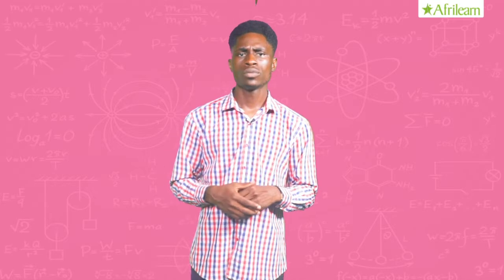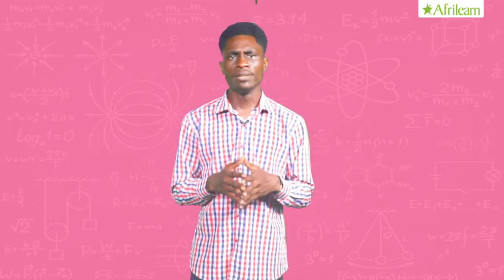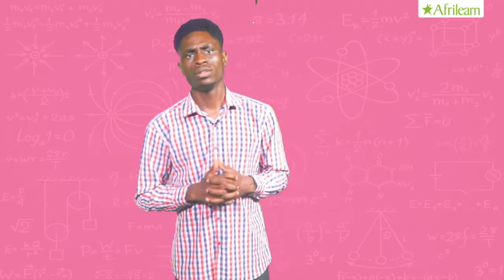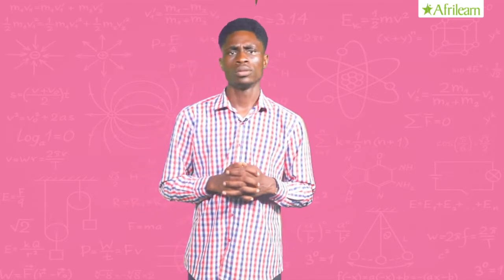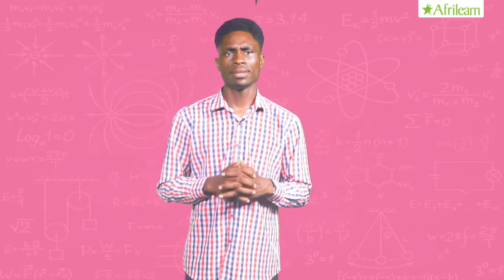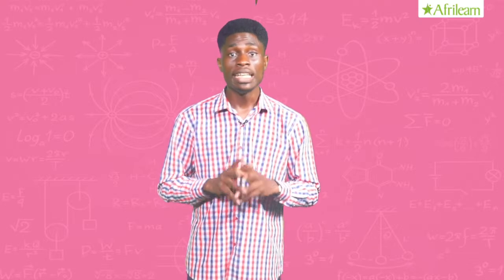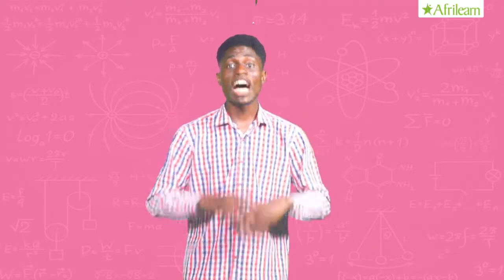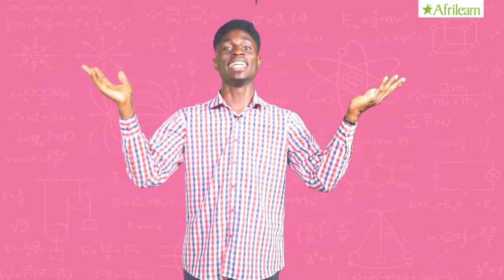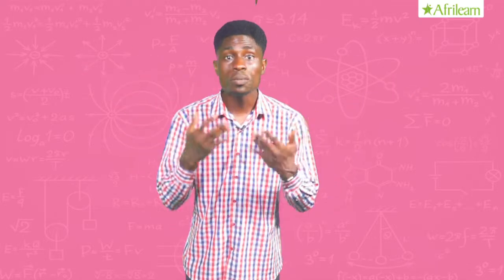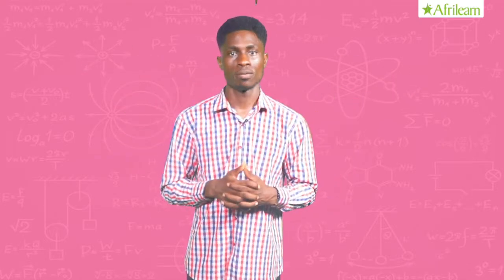What is the formula for the area of a right triangle? asked Ms. Philip. Almost immediately, everyone could answer: half base times height. That was a simple question, right?